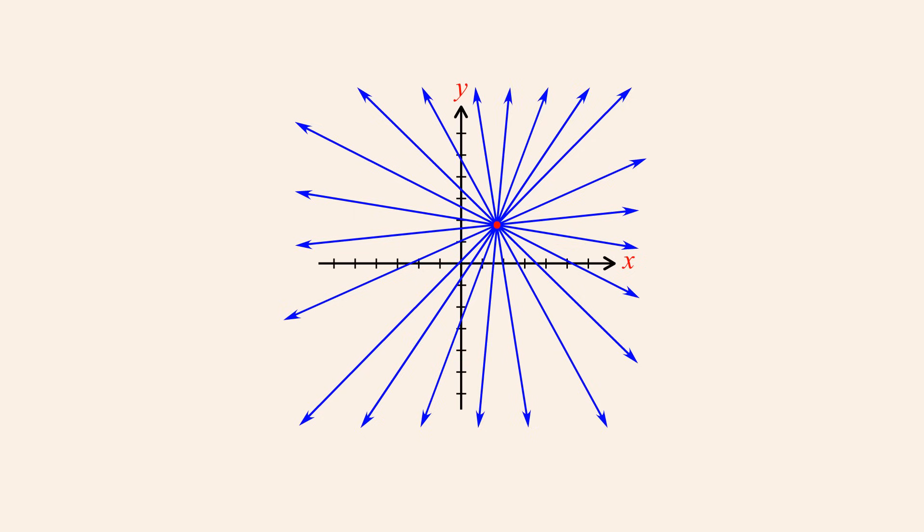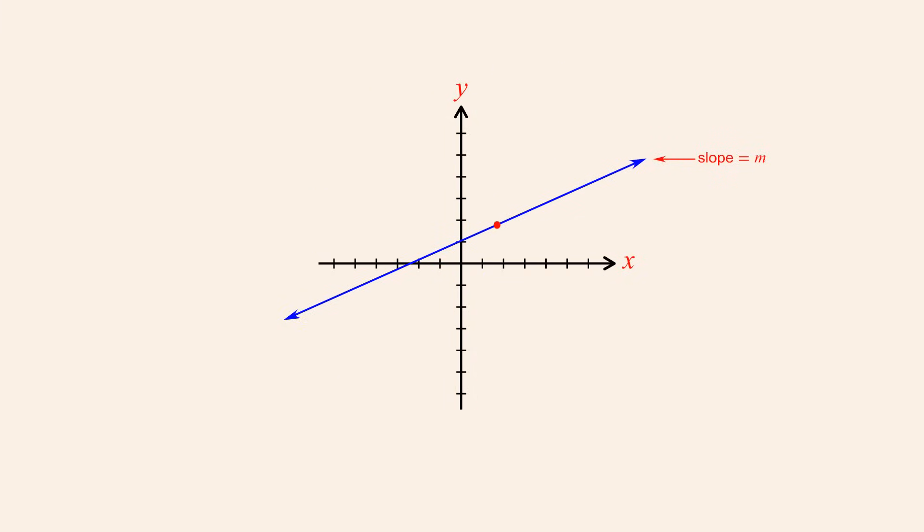To uniquely describe a line on a plane, we must specify both its slope and at least one point which the line includes.